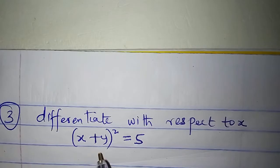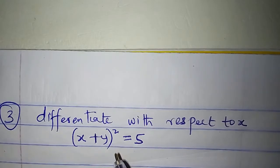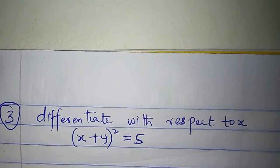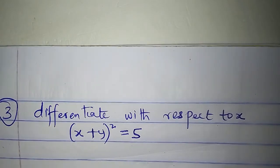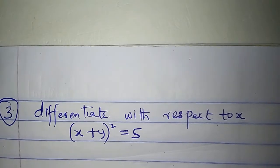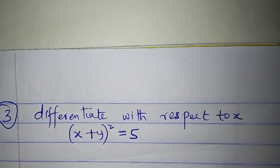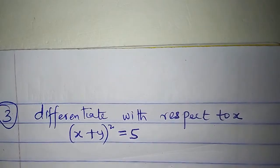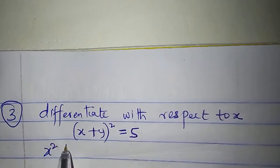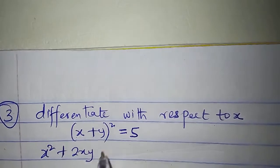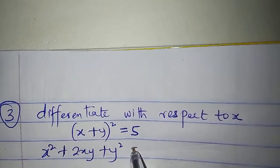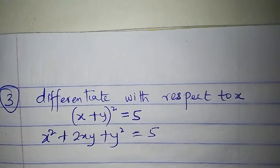Next: differentiate x plus y all squared equal to 5 with respect to x. I will use two methods. Method 1: I will expand x plus y all squared, giving x squared plus 2xy plus y squared equal to 5. Now let's differentiate.